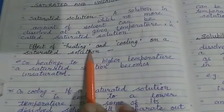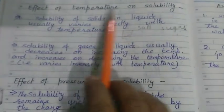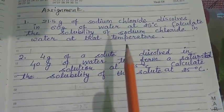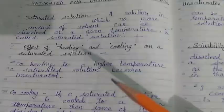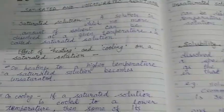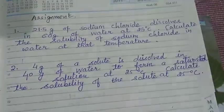Today we studied: saturated and unsaturated solutions, the effect of heating and cooling on saturated solutions, what is solubility, how to calculate it, the effect of temperature on solubility, and the effect of pressure on solubility. Please solve the two numericals and send me only the assignment questions — not the classwork, as that is your responsibility to copy correctly. Thank you.